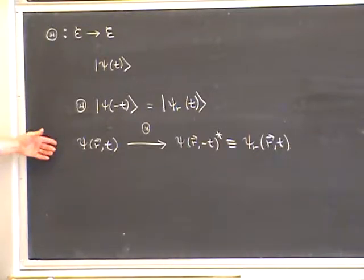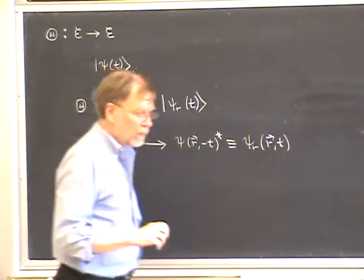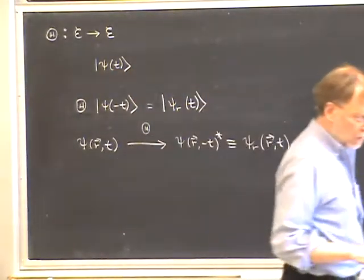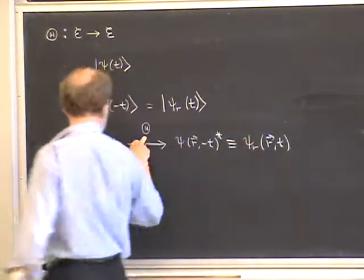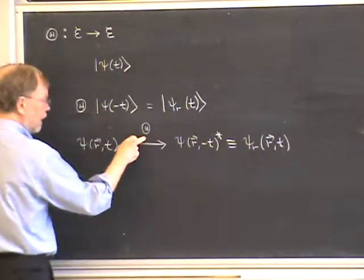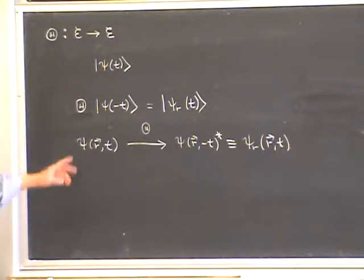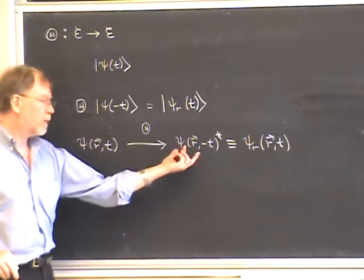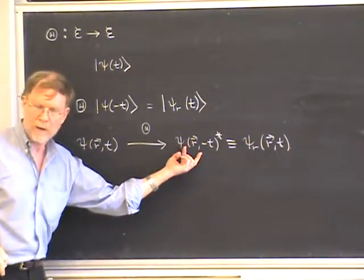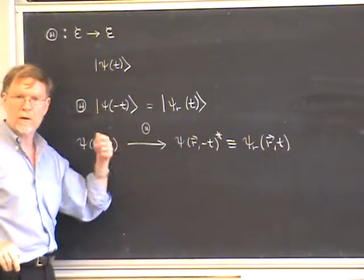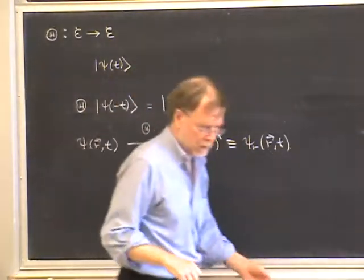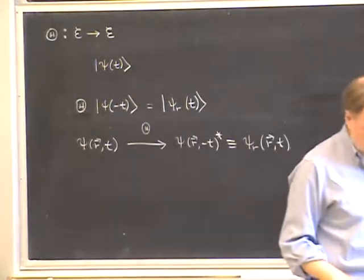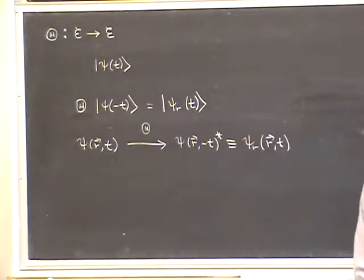In the special case of a spinless particle in 3D, if I write this out in wave function language, ψ_r(t) goes over into ψ*(r, −t), which we define to be the time-reversed state of ψ(r, t). From this particular example, you can already see that the time-reversal operator cannot be a linear operator, because a linear operator can never take a wave function into its complex conjugate. So in fact it's an anti-linear operator.